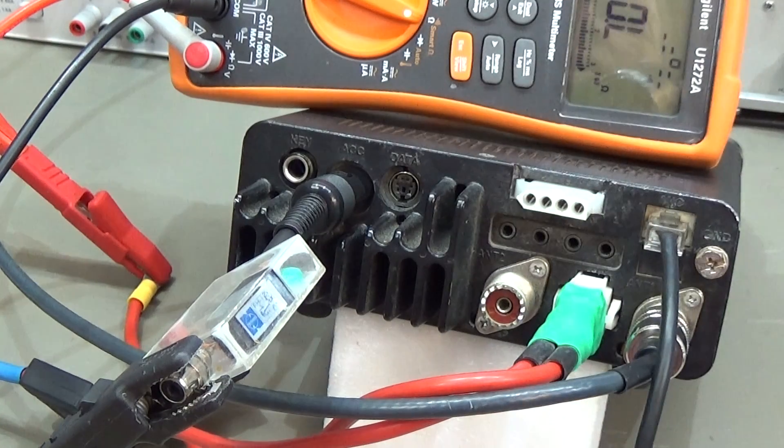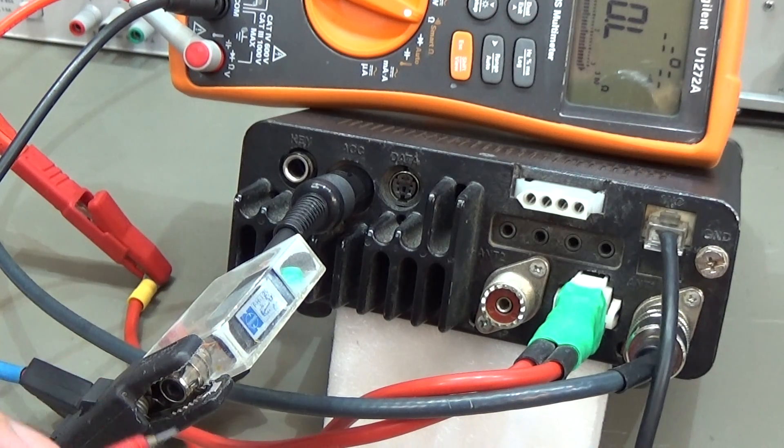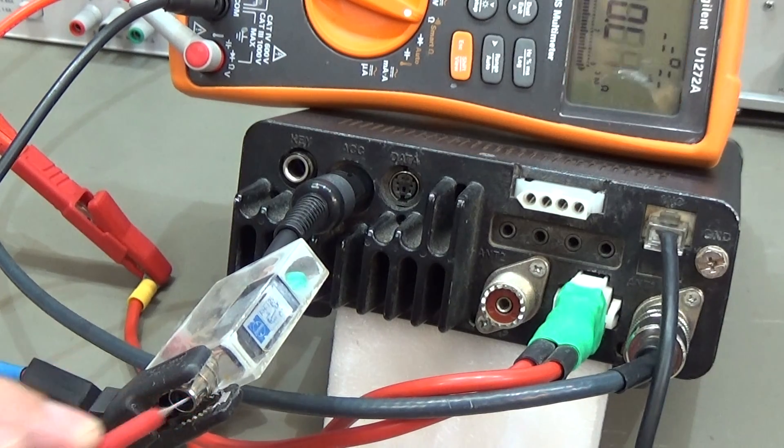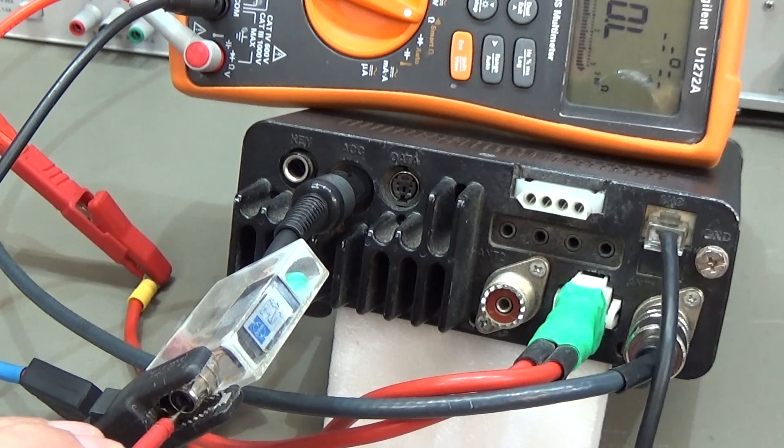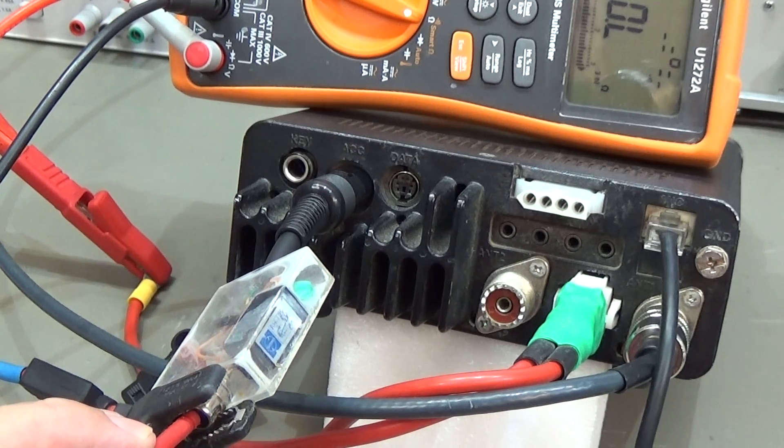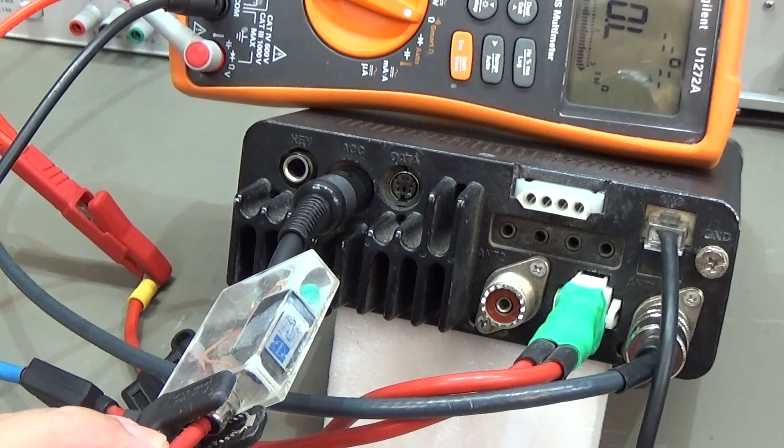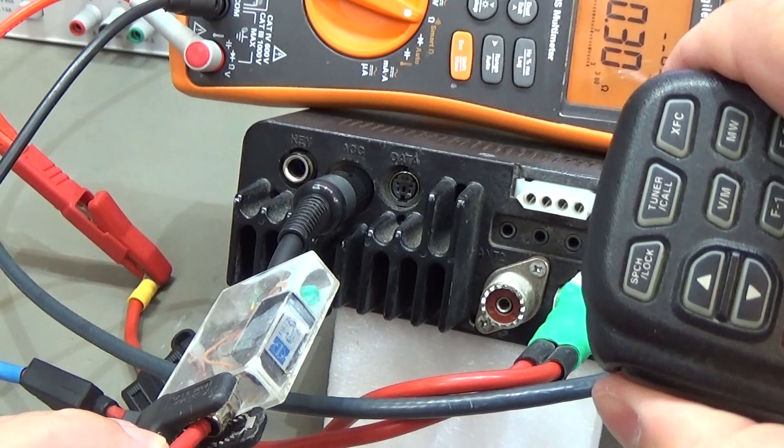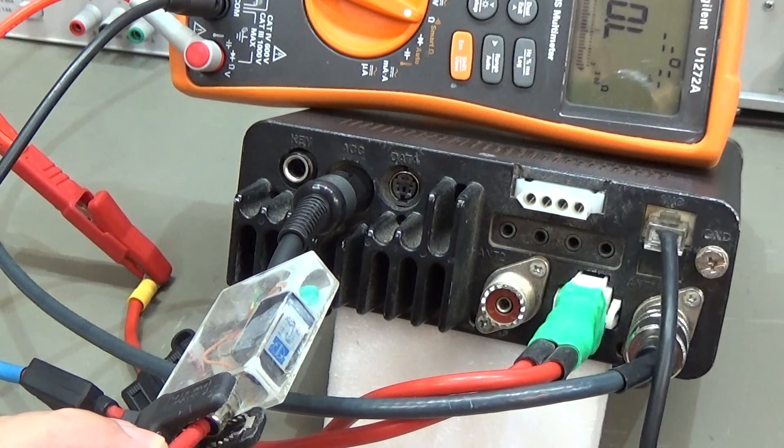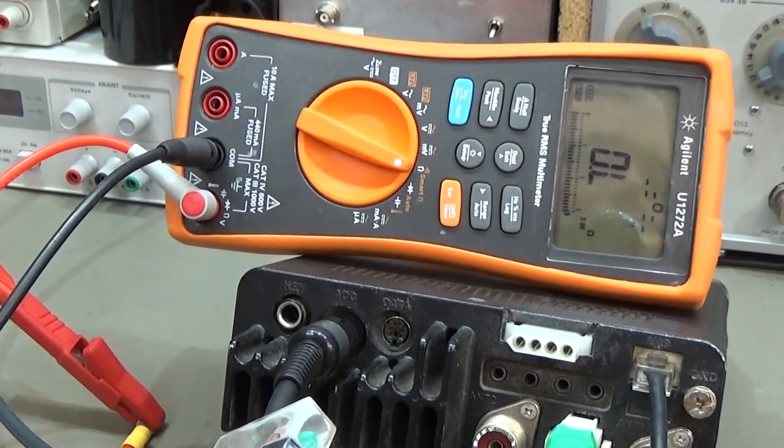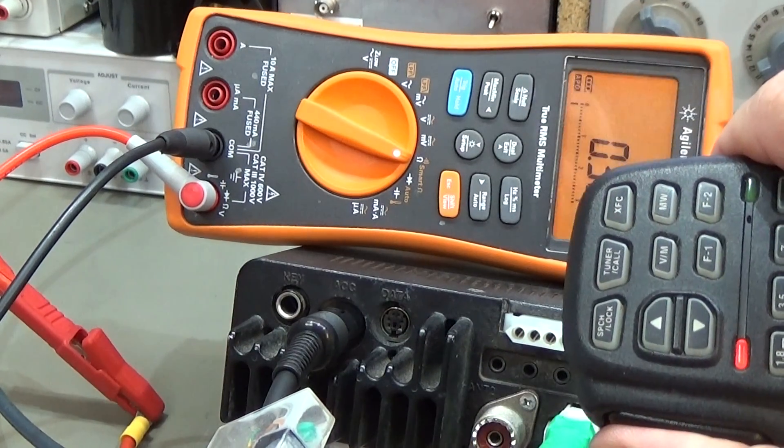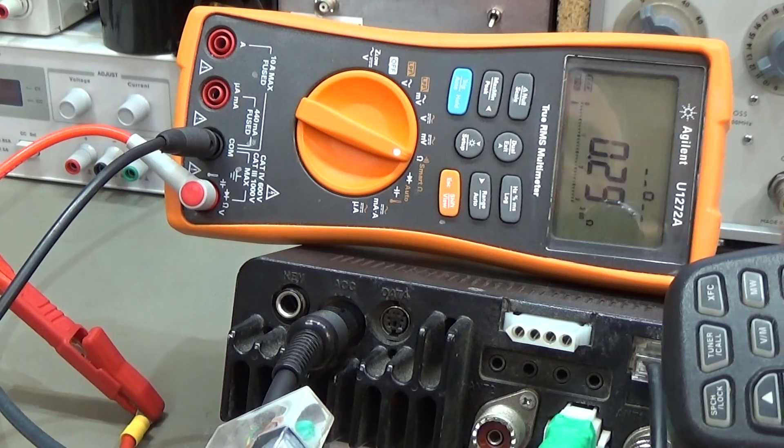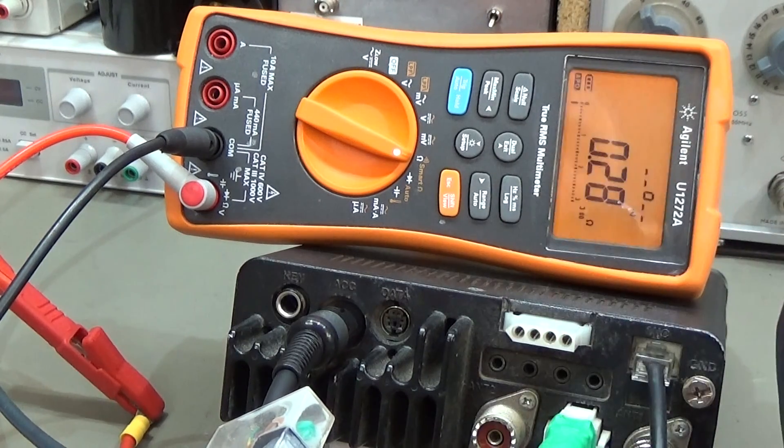Therefore I set here my meter in beeper mode, it is working. Now when I go here into the inner of the contact and I press PTT, then it should beep and it is beeping.